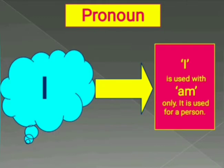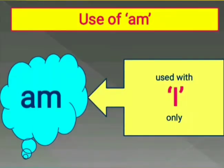It is only used for a person. Also, you can say that am is used with I only, and I is used with am only. So whenever there is 'I' written and you have to fill in the blank with is, am, or are, then you will always write am in the blank if I is written before the blank.